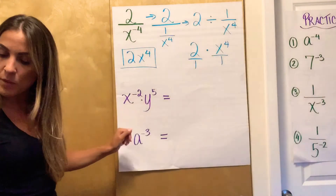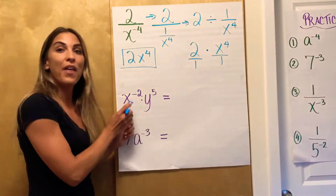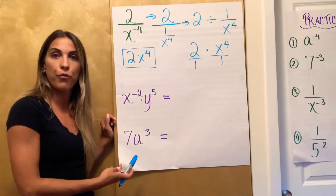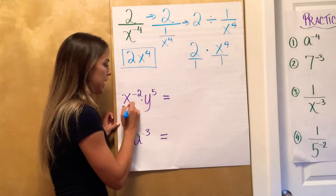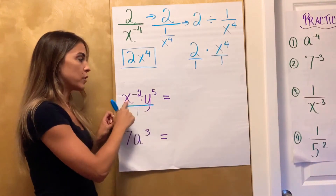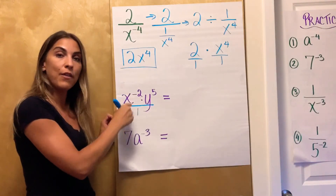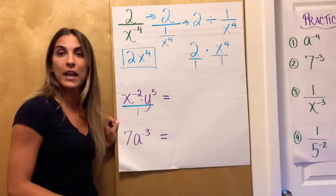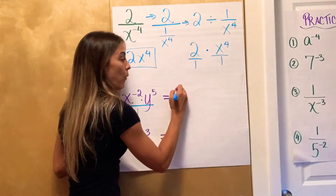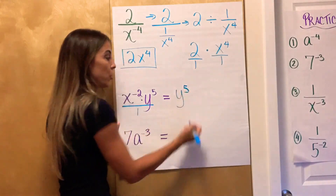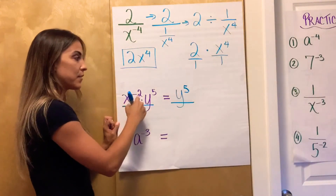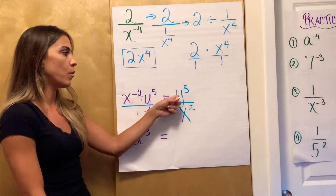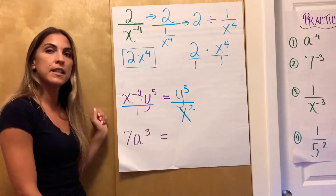x to the negative 2nd times y to the 5th. What has a negative exponent? The x does, so the x needs to move. It looks like there's no fraction, but remember, when there is no fraction, I could really write it as something over 1, so both x and y are in the numerator right now. That y to the 5th does not have a negative exponent, so don't touch it — leave it in the numerator. The x to the negative 2nd needs to move to the denominator to make the exponent positive. So this simplifies to y to the 5th over x to the 2nd.